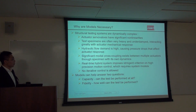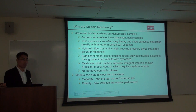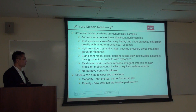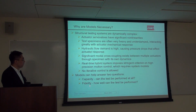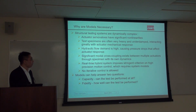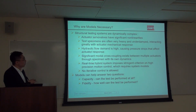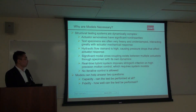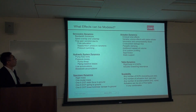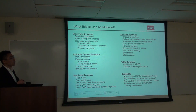Models help us answer two important questions: first, what is the capacity — can we do this test at all, or will it go unstable? We can predict that before running the test. Second, if we can do it, what is the performance and accuracy we can achieve? These are the two questions a good overall system model should answer.